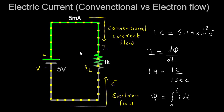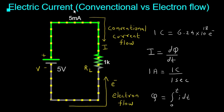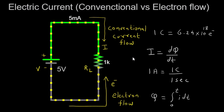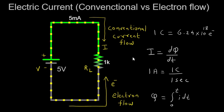Hello everyone, welcome to today's video where we will be diving into the fascinating world of electric current. Specifically, we will explore the difference between conventional current and electron flow, and how these concepts relate to the movement of charge in an electrical circuit. By the end of this video, you will have a clear understanding of these concepts. So, let's jump right in!